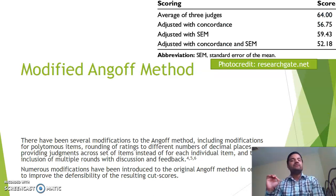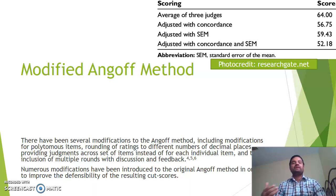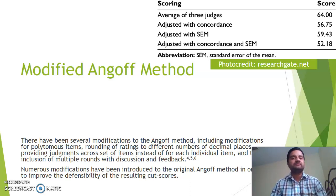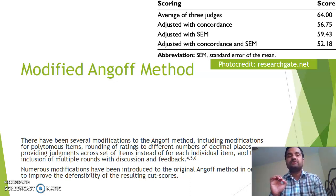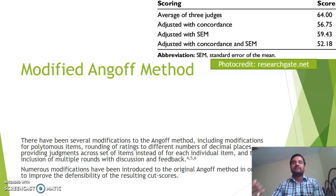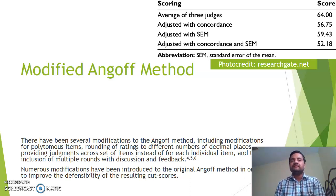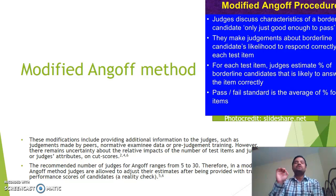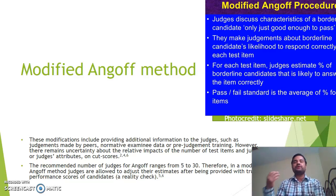Throughout the years, the original Angoff method has been modified — whether the modification is for polytomous items, rounding of ratings to a different number of decimal places, providing judgment across the set of items instead of for each individual item, or the inclusion of multiple rounds with discussion and feedback. Such modifications help to improve the defensibility of the resulting cut scores, providing additional information to the judges or experts and improvement in the cut score.